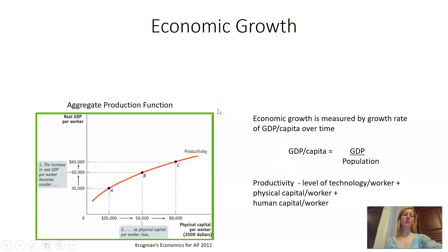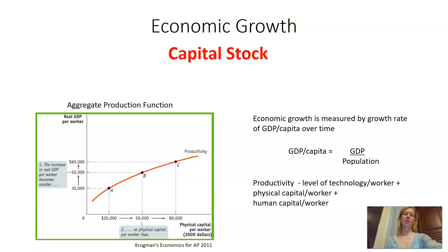When we look at the different determinants that affect productivity — technology, physical capital, and human capital — the number one that gets tested on is capital stock. In the short run, when there's a decrease in the real interest rate, there's an increase in capital. Over time, that increase in capital causes capital formation, or capital stock, in the long run, and this will lead to economic growth.